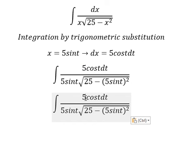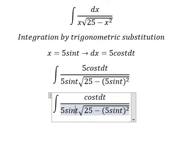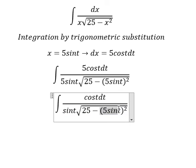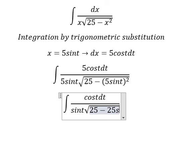Number five, we simplify. This one we got 25 sine t squared.